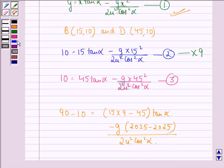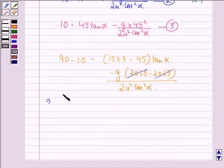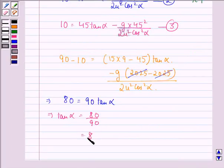This term becomes 0, and this implies 80 is equal to 90 tan alpha, which implies that tan alpha is equal to 80 divided by 90, that is equal to 8 by 9.